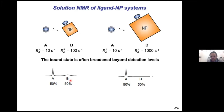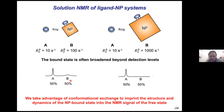So how do we address this? In solution NMR, we take advantage of the chemical exchange between state A and state B to imprint information about the bound state into the spectrum of the free state, which we can actually observe. Before introducing the NMR methods, let's look at how the exchange between the dissolved and adsorbed states affects the signal of the dissolved state.